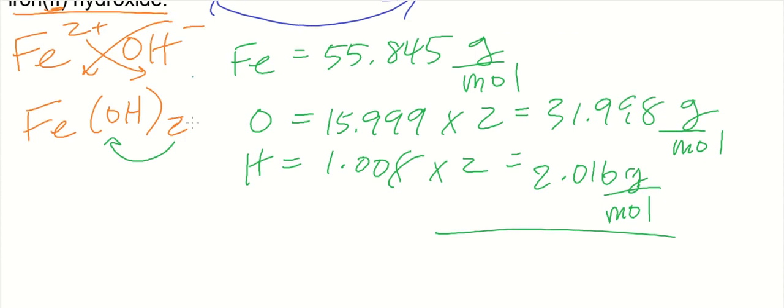Let me punch these numbers in. Did you get 89.859 grams per mole for the molar mass of iron(II) hydroxide? Hopefully you did because we need that to convert. That's our conversion factor that we're going to use.